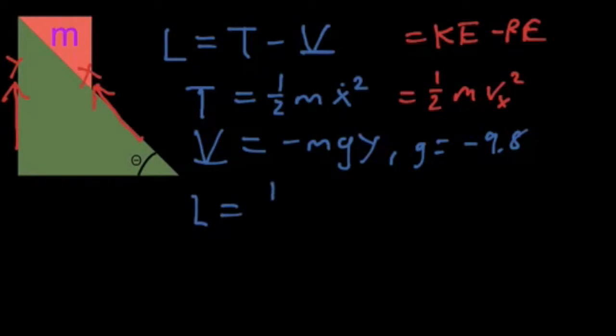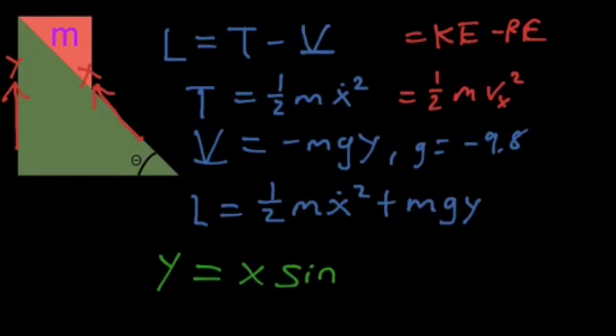We have the Lagrangian equals one-half m x dot squared plus mgy. The second step now is to define our constraint. And because this is an inclined plane, that's pretty simple. y equals x times sin theta. That's why we had to make the x go upward along the plane. So that way as x increased, y increased.